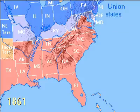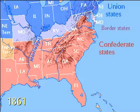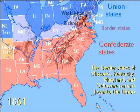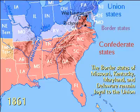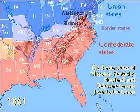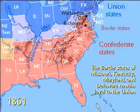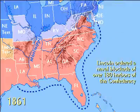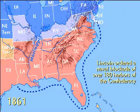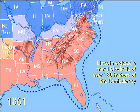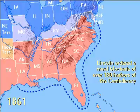Lincoln moved to keep the border states — Missouri, Kentucky, Maryland, and Delaware — loyal to the Union. West Virginia split from Virginia and became a state in 1863. To cut off supplies, Lincoln ordered a naval blockade of over 180 harbors of the Confederacy.